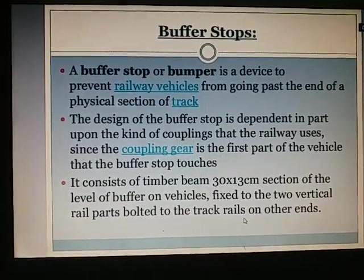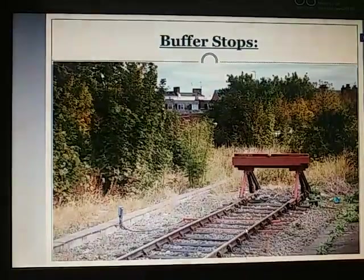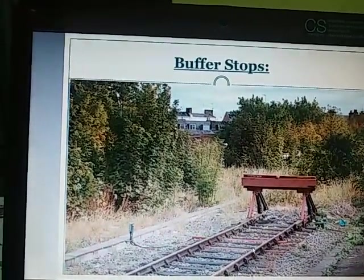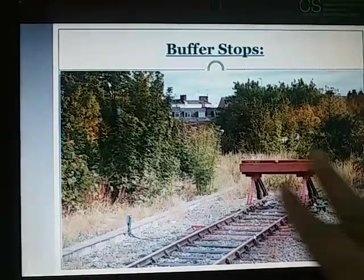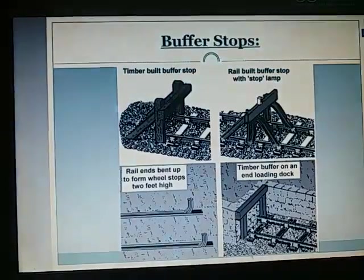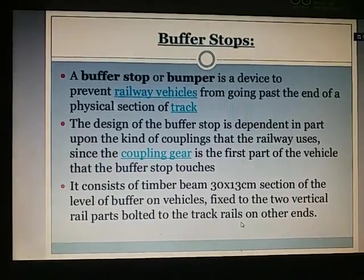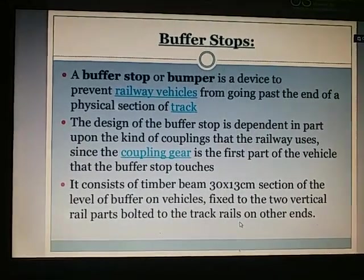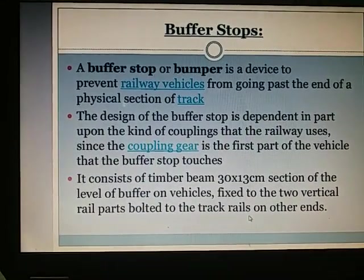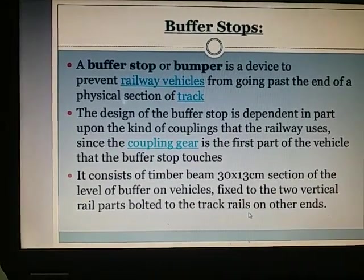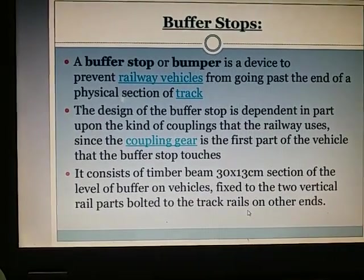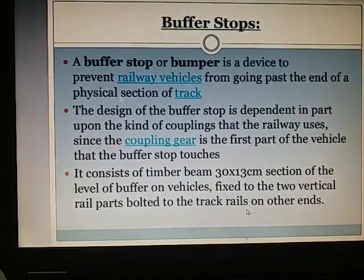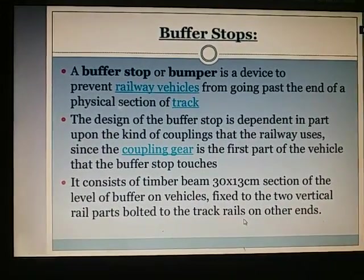Buffer stops: A buffer stop or bumper is a device to prevent railway vehicles from going past the end of a physical section of track. The design of the buffer stop depends in part upon the kind of couplings that the railway uses. It consists of a timber beam of 13 cm section at the level of the buffer on vehicles, fixed to two vertical rail paths bolted to the track rails on the other ends.